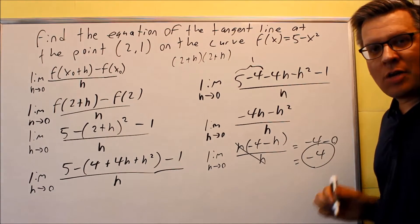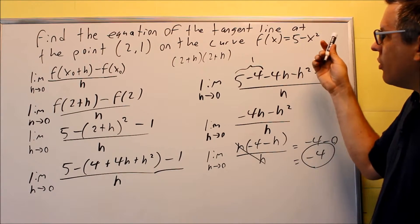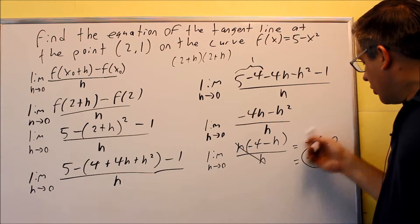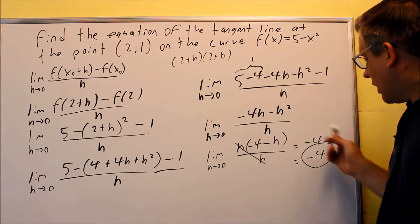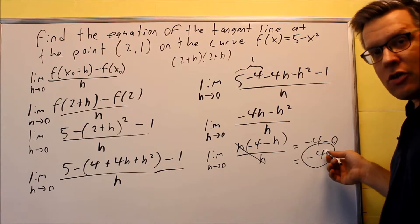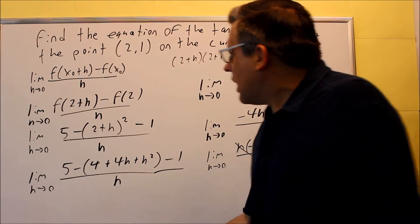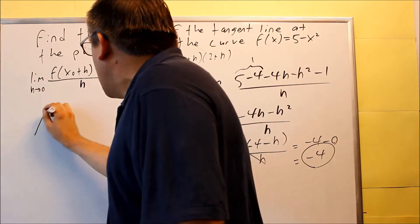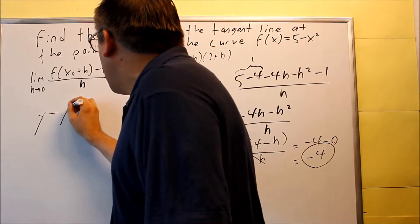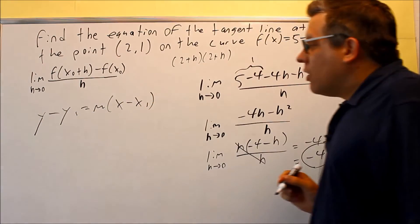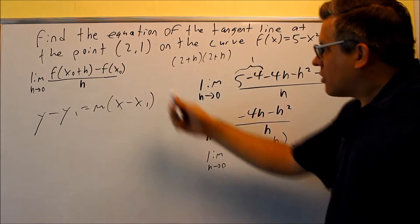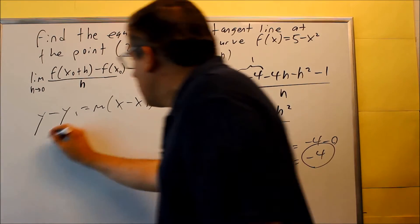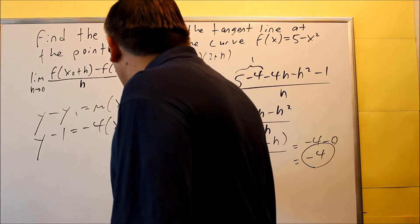That's the slope of the tangent line, but that's not the complete answer because they want the equation of the tangent line at that point. We need to find the equation of a line with slope negative 4 passing through point (2, 1). We use the point-slope formula: y minus y1 equals m times (x minus x1). Here x1 is 2, y1 is 1, and m is negative 4, giving us y minus 1 equals negative 4 times (x minus 2).